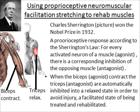His finding is so well-established it's called Sherrington's Law, which states that for every activated neuron of a muscle, there is the corresponding inhibition of the opposite muscle. For instance, when the bicep — the agonist — contracts, the tricep, the antagonist, is automatically inhibited into a relaxed state in order to avoid injury, like an avulsion fracture when your tendon pulls too hard on the bone.